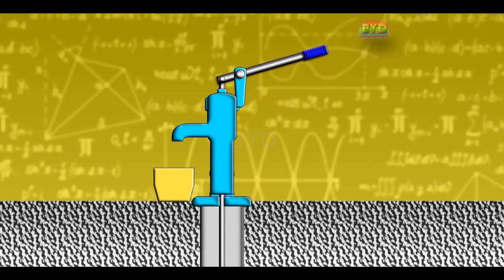A manual water pump is a mechanical device that uses manual human power to lift water from the well.